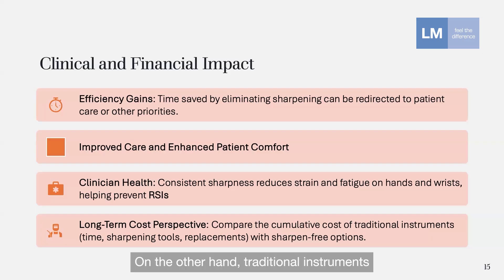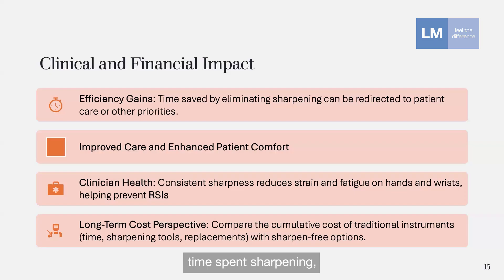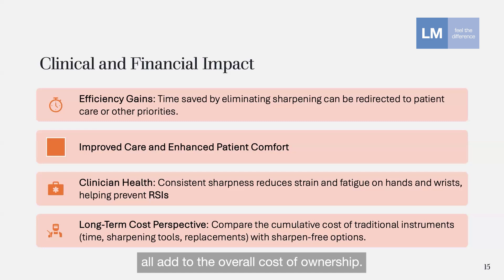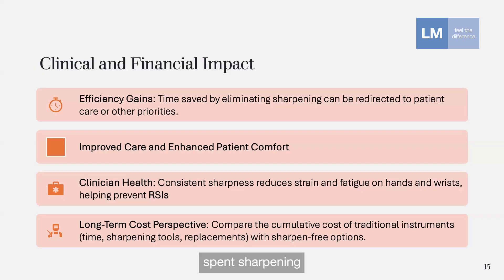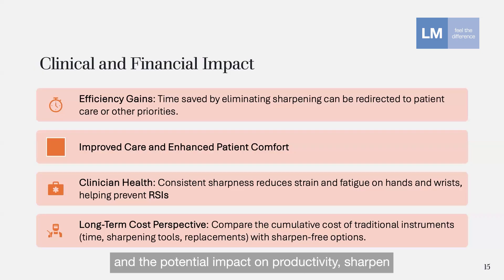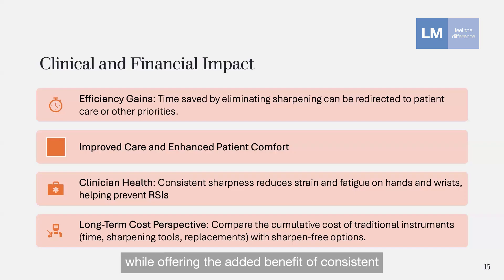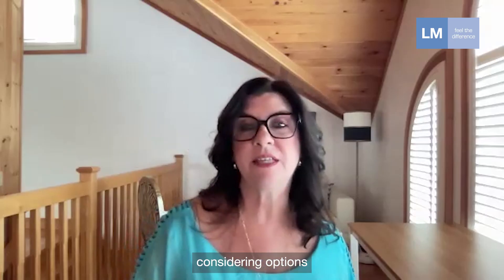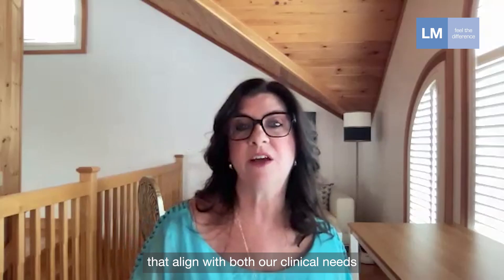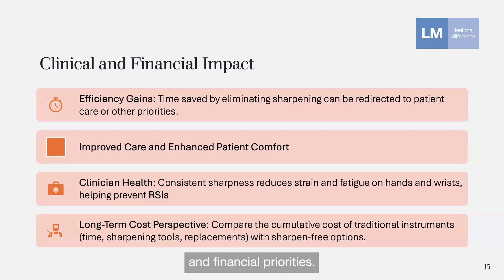Traditional instruments have a lower upfront cost but require ongoing maintenance. Time spent sharpening, the cost of sharpening tools, and the potential for over-sharpening all add to the overall cost of ownership. When we calculate the time spent sharpening and the potential impact on productivity, sharpen-free instruments often balance out in terms of cost while offering the added benefit of consistent sharpness and reduced maintenance. Understanding these considerations allows clinicians to make informed choices that align with both their clinical needs and financial priorities.